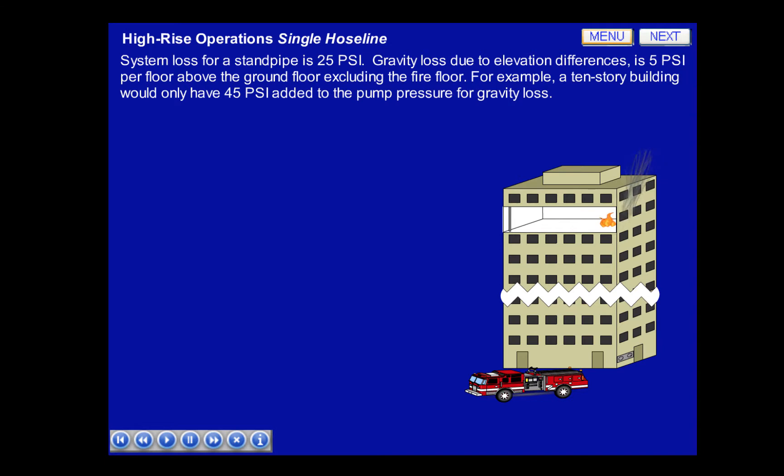System loss for a standpipe is 25 PSI. Gravity loss due to elevation differences is 5 PSI per floor above the ground floor excluding the fire floor. For example, a 10-story building would only have 45 PSI added to the pump pressure for gravity loss.